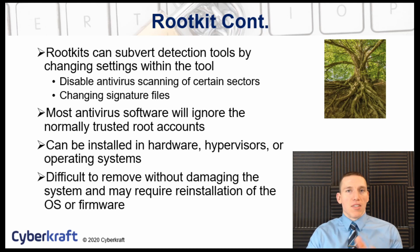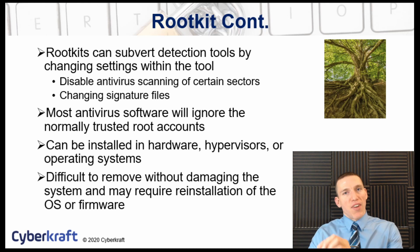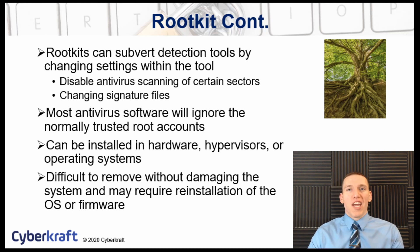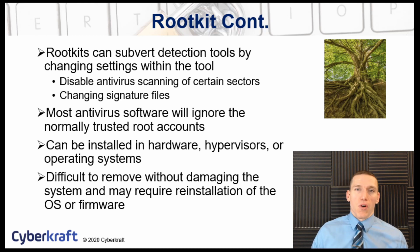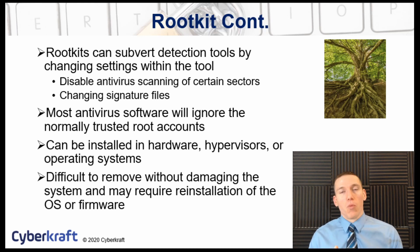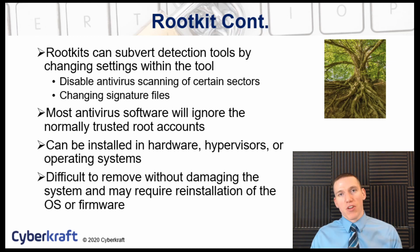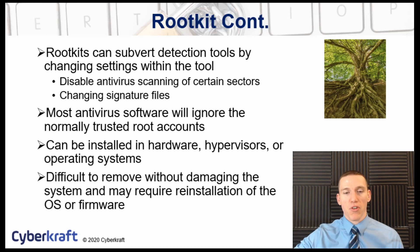Rootkits can also subvert detection by disabling certain antivirus features — because they have administrative access, they can do that. They can also change or delete the signature files that would normally detect the rootkit. So a lot of antivirus software ends up ignoring the rootkit entirely because the rootkit has configured the antivirus to ignore it — a tricky and interesting way of conducting an attack.